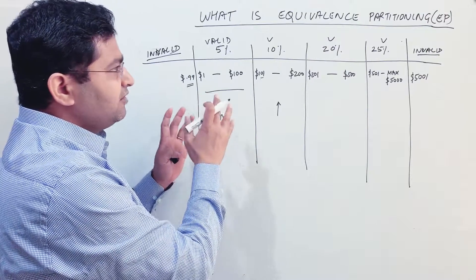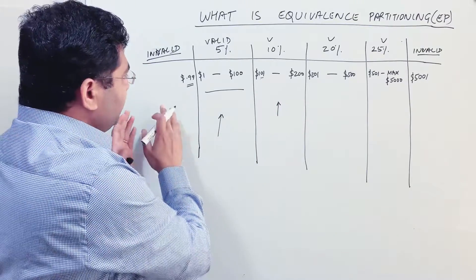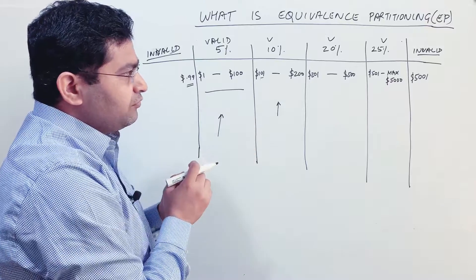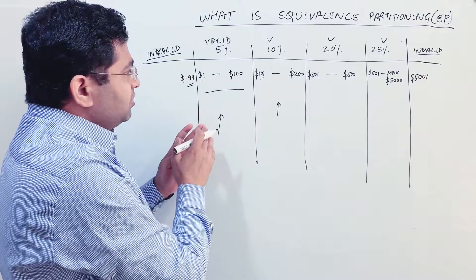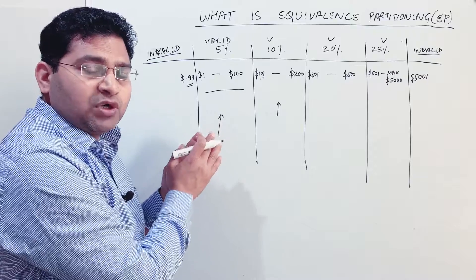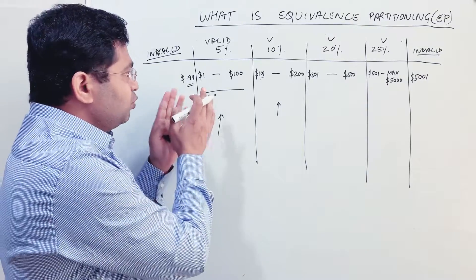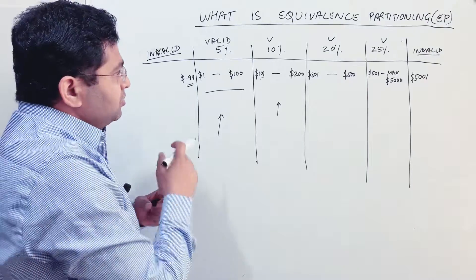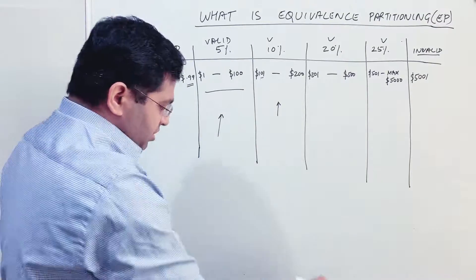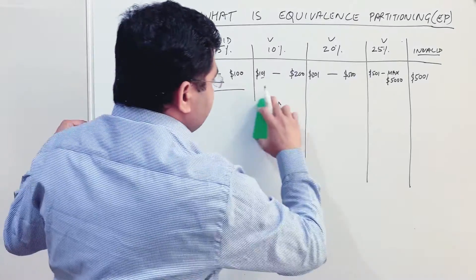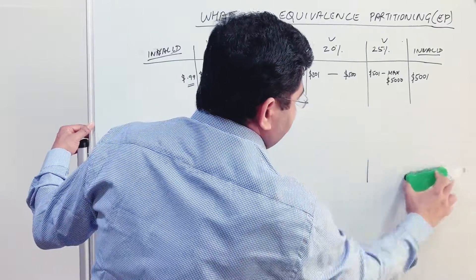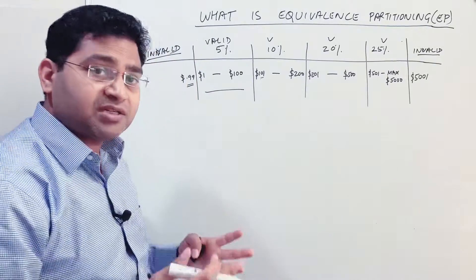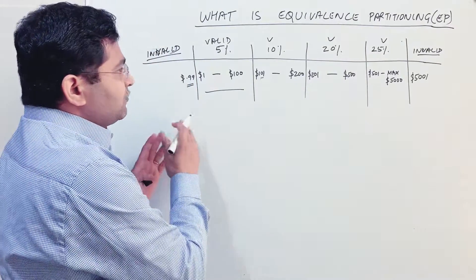Now you can see that once we have divided the discount module into logical valid and invalid partitions, we have a clear understanding of what values we need to test to get different discount outcomes. This is very important in order to get the best coverage with the minimum number of test cases.